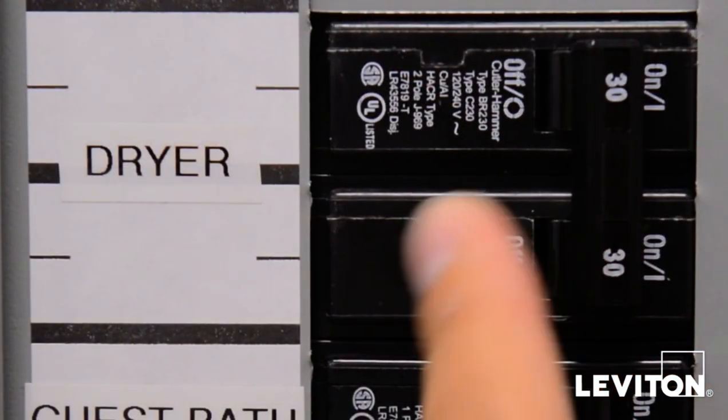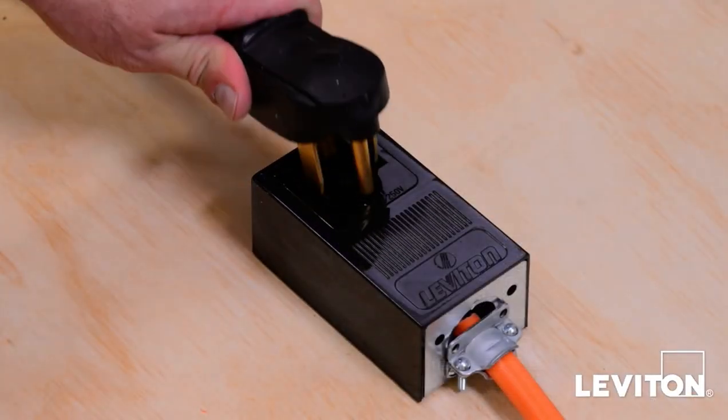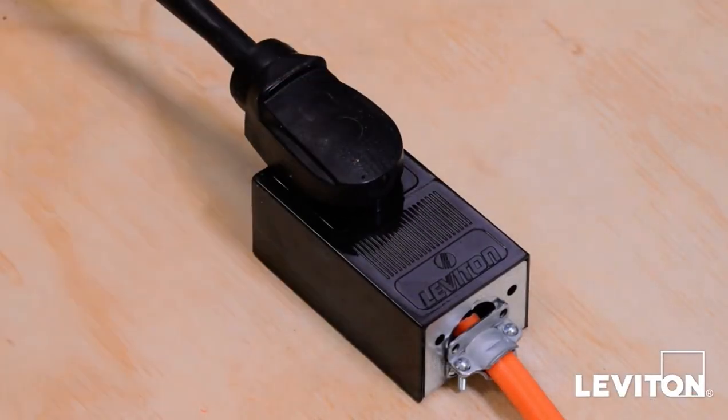Restore power at the circuit breaker. Now, test the installation by plugging an appliance into the receptacle. Your Leviton power receptacle is now ready for use.